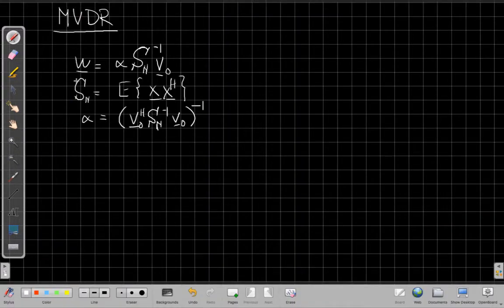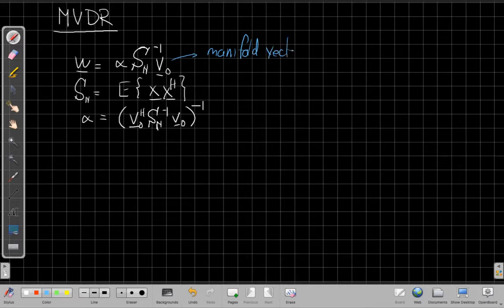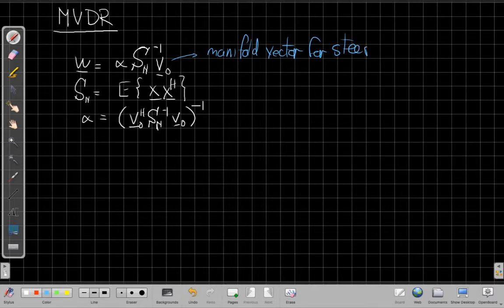For the MVDR beamformer we've seen the array weights are the gain alpha times S_N the spatial covariance matrix inverse times V naught, where V naught is the manifold vector for the steering direction or the replica vector for the look direction. The spatial covariance matrix is the expected value of XX Hermitian, the outer product. And alpha is just what we need to get the unity gain value.